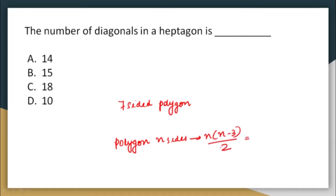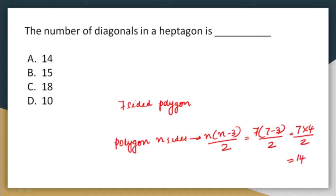In a heptagon there are seven sides, so the number of diagonals is 7 × (7 − 3) / 2 = 7 × 4 / 2 = 14. The correct answer here will be option A, 14.